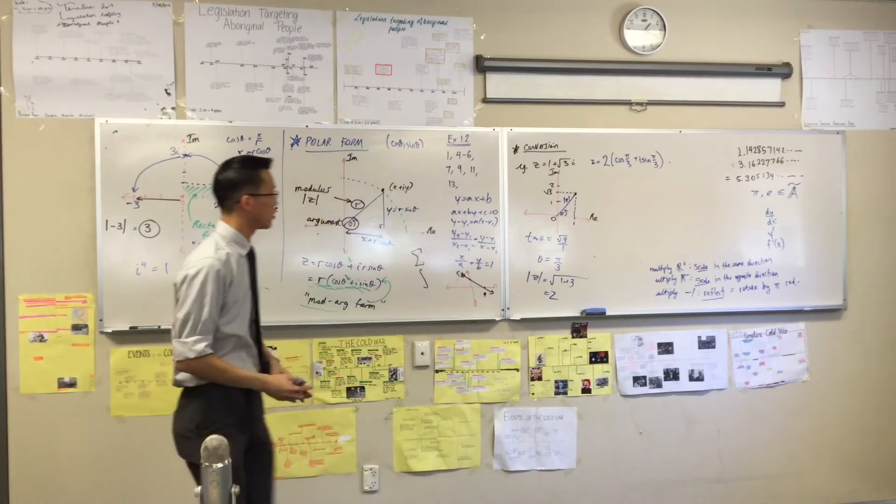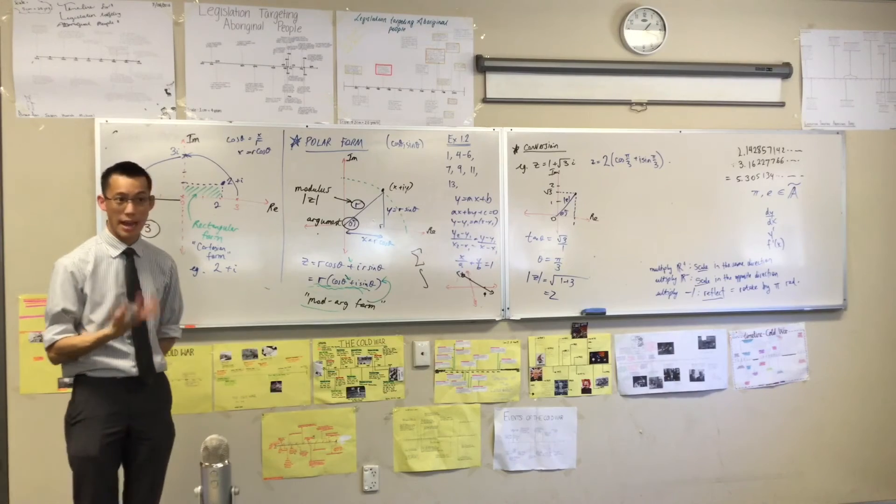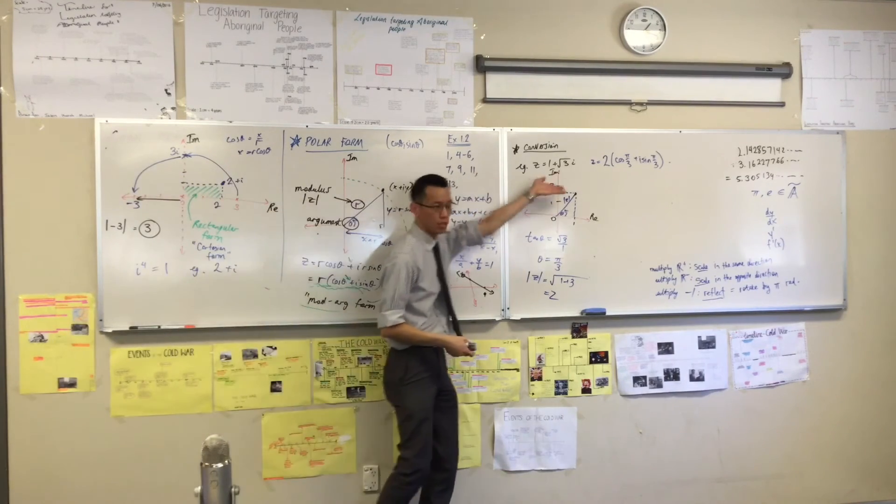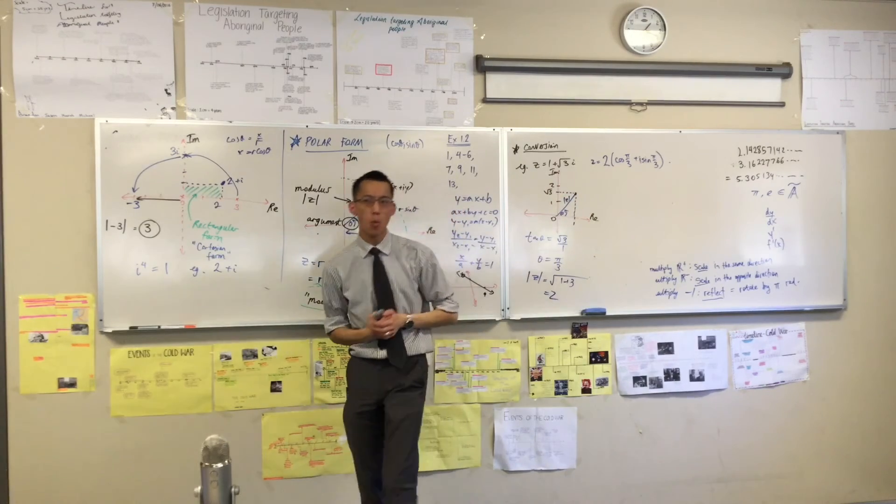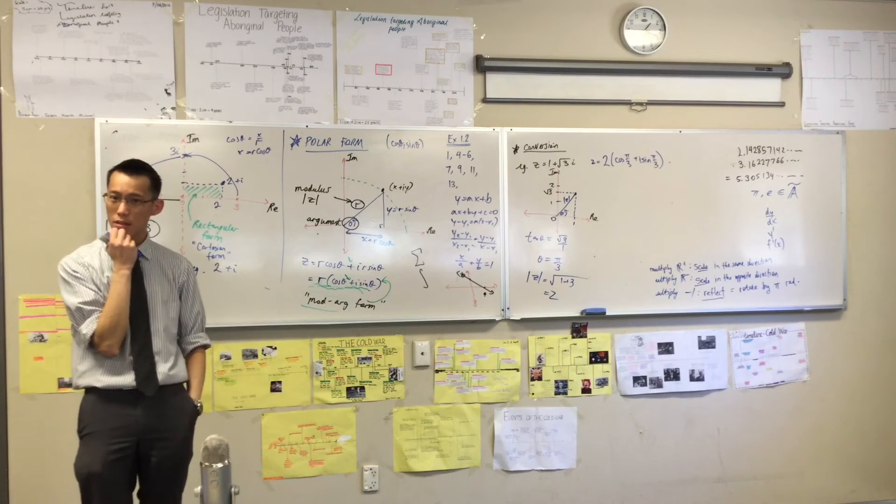Now, before I finish, I want you to notice, you need a distance, you need an angle, right? The distance is unambiguous, you're like, that's only 2. But there's more than one angle that you can turn around, that you can rotate through, that will get you to that point, right? Pi on 3 is one of them. Can someone give me another angle that I could rotate through and still be facing at z?